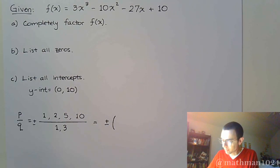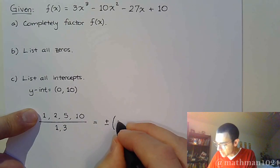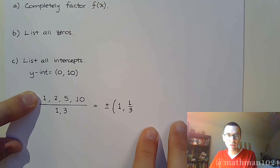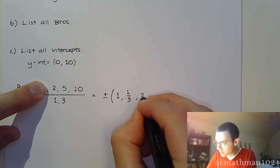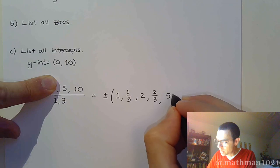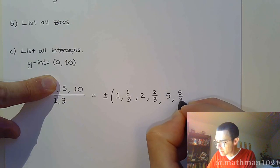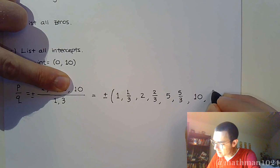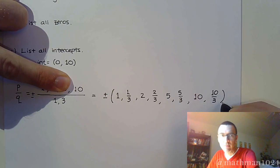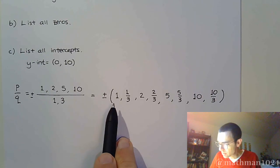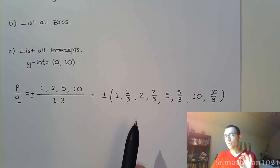Listing all possible combinations: ±1, ±1/3, ±2, ±2/3, ±5, ±5/3, ±10, and ±10/3. If there is a rational solution to this polynomial, it has to be one of these values.